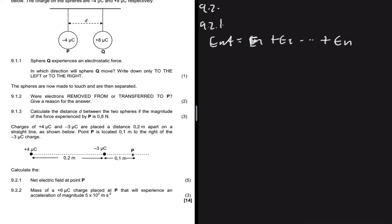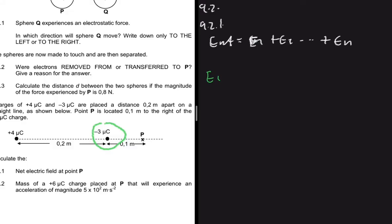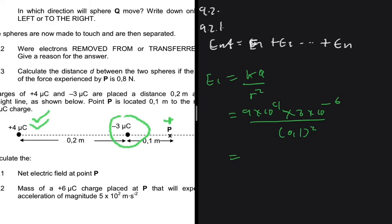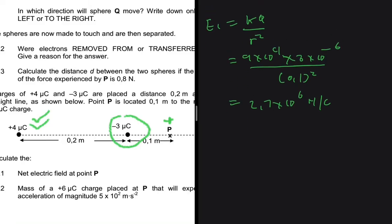Let E1 be the electric field due to the −3×10⁻⁶ C charge. Using E = kq/r², we get E1 = (9×10⁹ × 3×10⁻⁶) / (0.1)² = 2.7×10⁶ N/C. For the direction: we assume point P is a positive test charge, and since it is attracted to the negative charge, E1 points to the left.